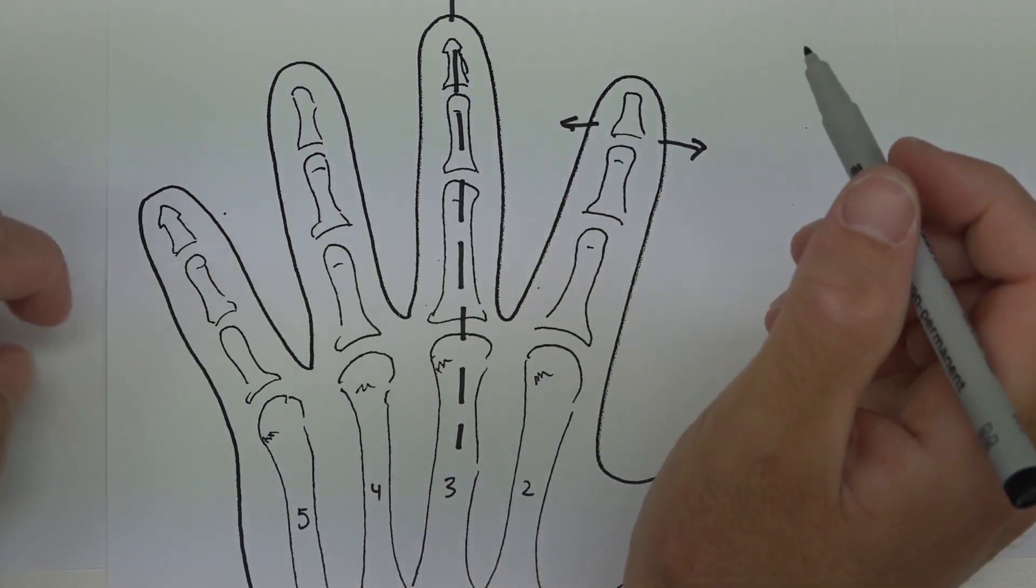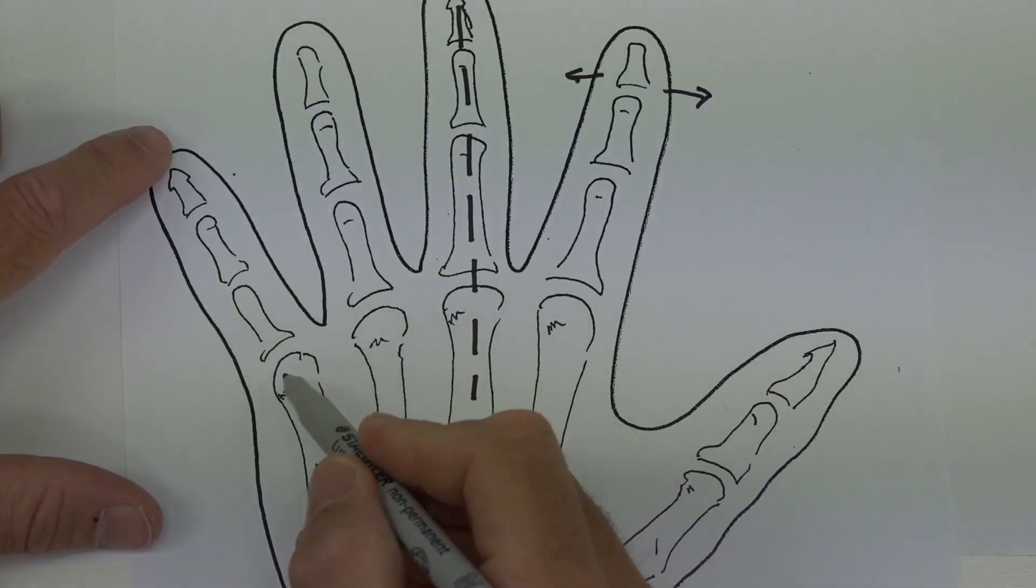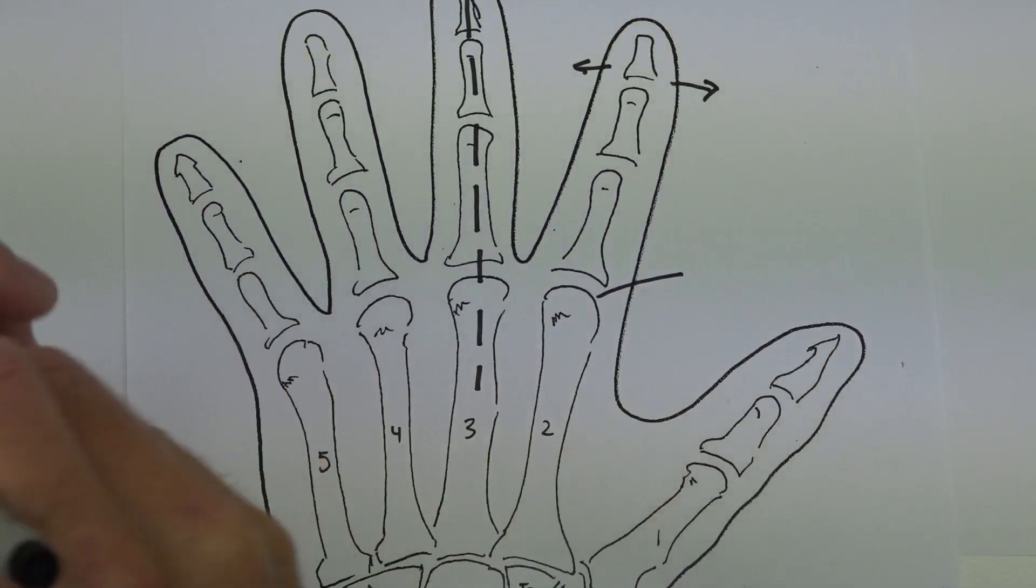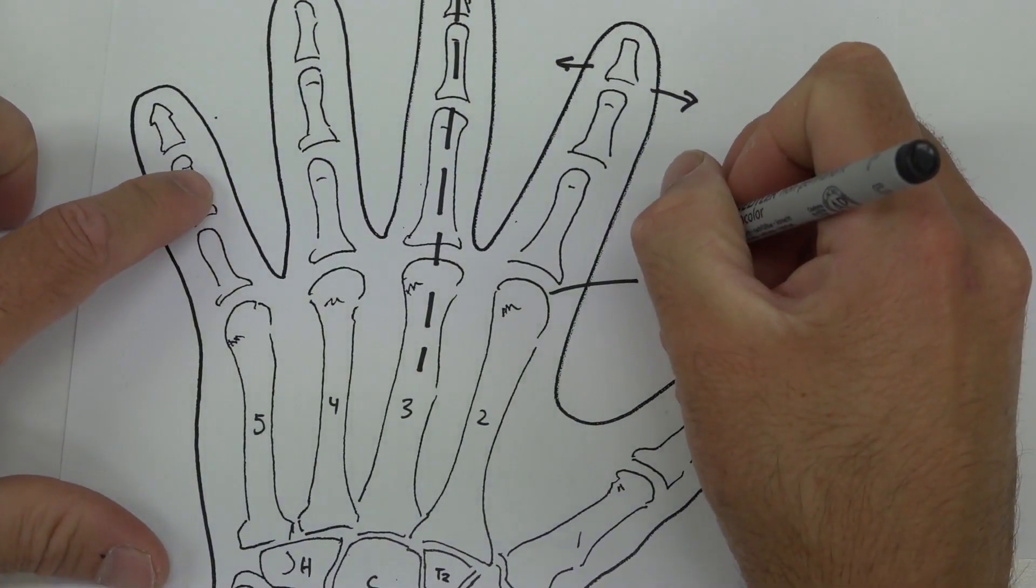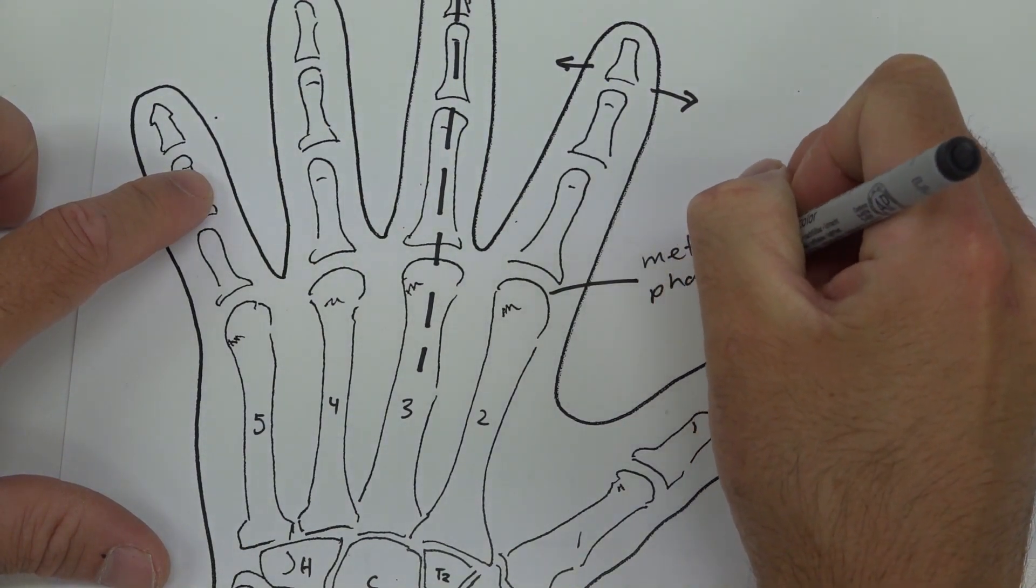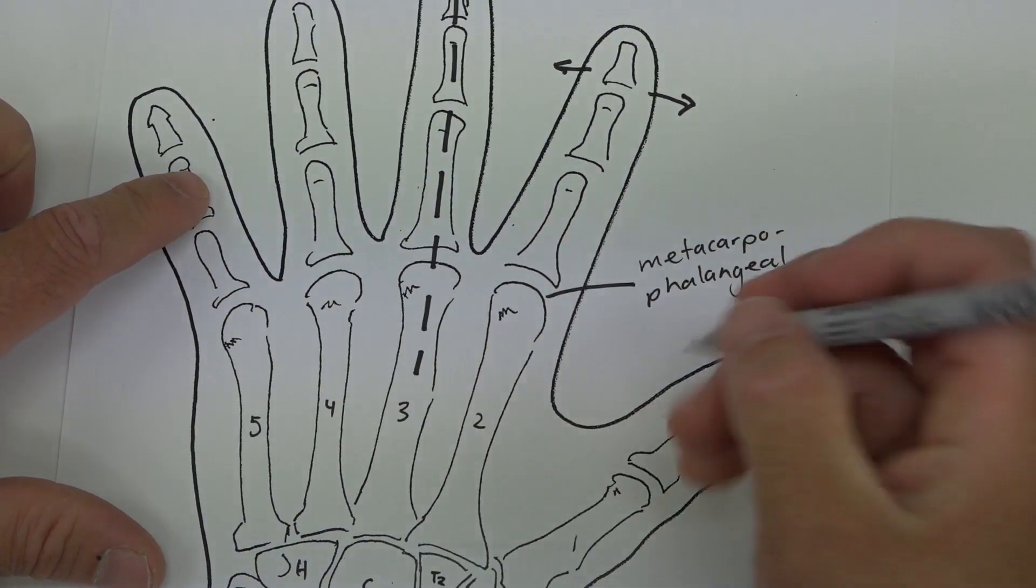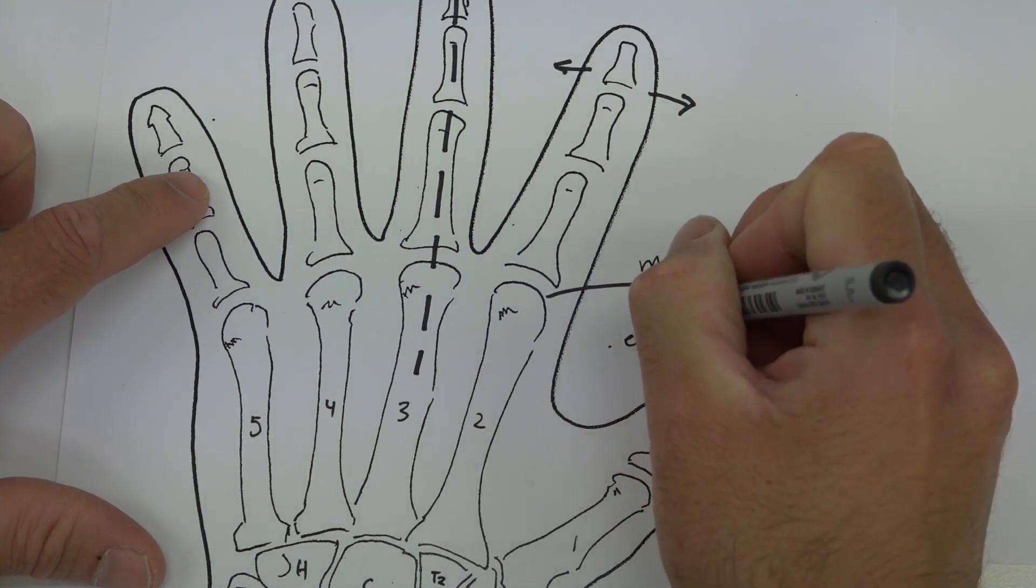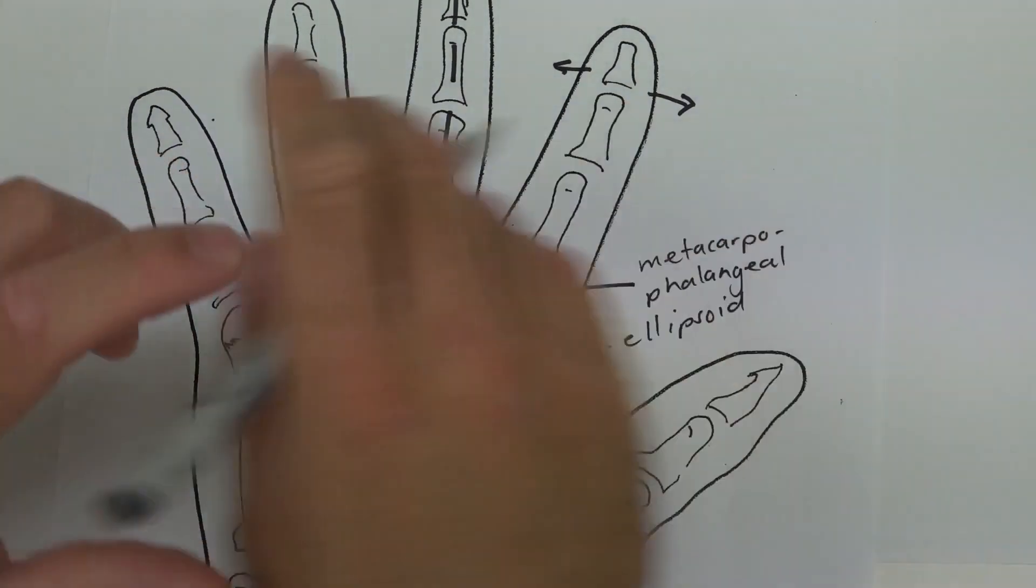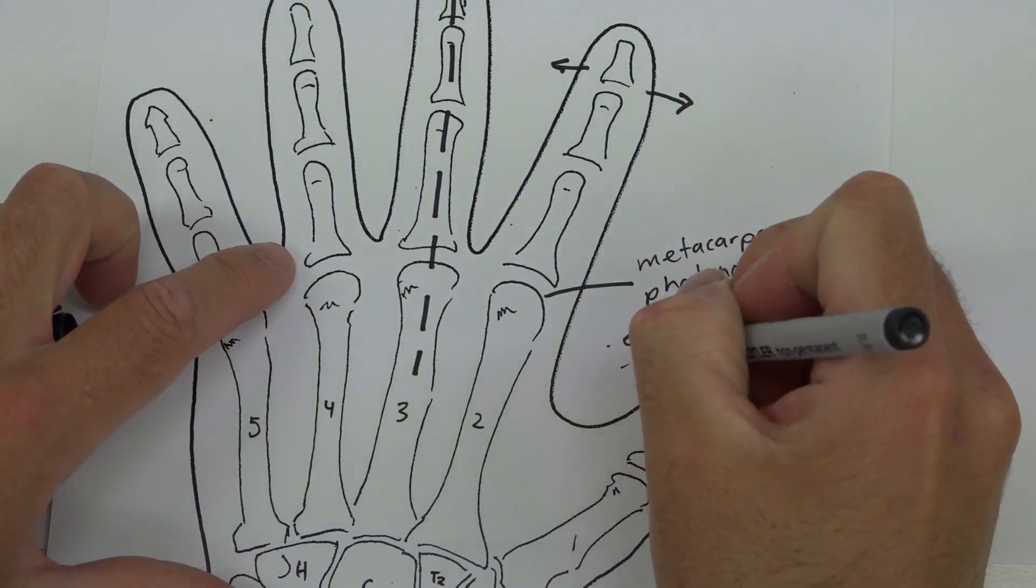Your knuckles, which are effectively these ones here, are our metacarpophalangeal joints. These are ellipsoid type joints—metacarpophalangeal because these are the metacarpals and these are the phalanges. This is an ellipsoid, which means oval-shaped type joint, and this will allow two ranges of motion.